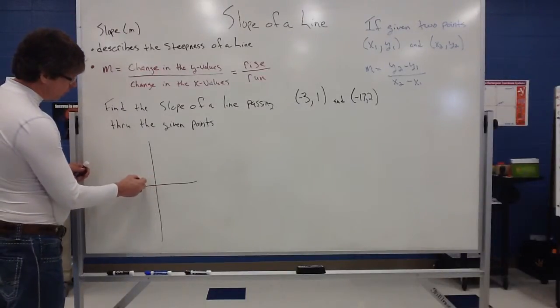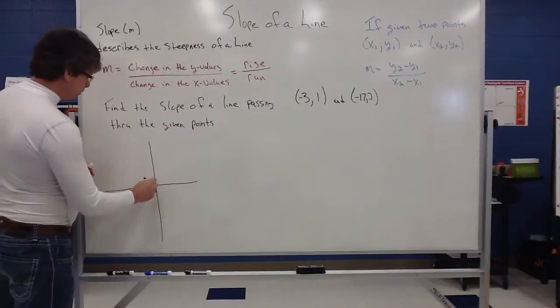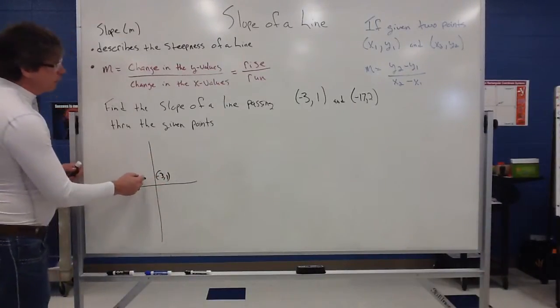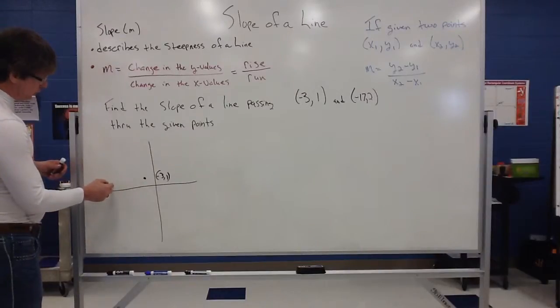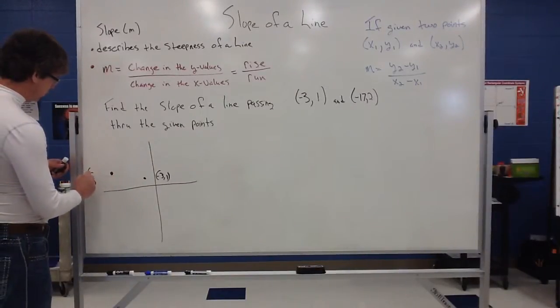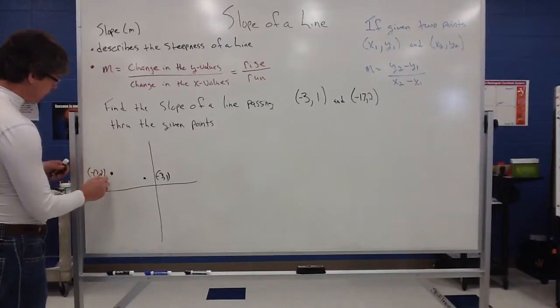I know (-3, 1) would be about here. So there's my (-3, 1). And then my (-17, 2) is going to be out further and up higher. So (-17, 2) would be out a little bit further and a little bit higher.